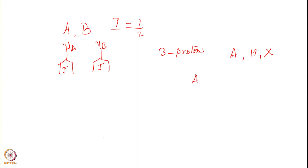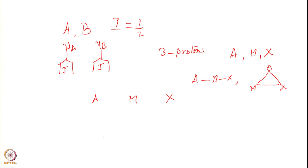In a linear system A-M-X, A is coupled to M, M is coupled to X, but A is not coupled to X. In a triangular arrangement, all three protons are coupled to each other. If we follow simple arguments, I represent the A, M, and X chemical shifts as one line each to consider how the spectrum will behave.